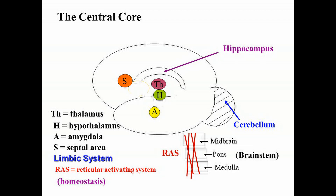Now let's look at other structures beneath the cerebral cortex. At the very center of the brain, I've drawn a circle labeled TH, representing the thalamus. Think of the thalamus as a sensory relay station. All sensory information traveling up the spinal cord to the brain goes first to the thalamus and then to other parts of the brain. For example, visual information travels from the eyes along the optic nerve to the thalamus, then to the visual cortex in the occipital lobe. Auditory information travels from the ears along the auditory nerve to the thalamus, then to the temporal lobe.